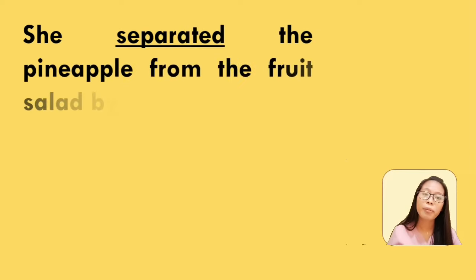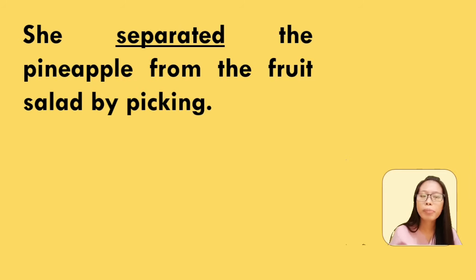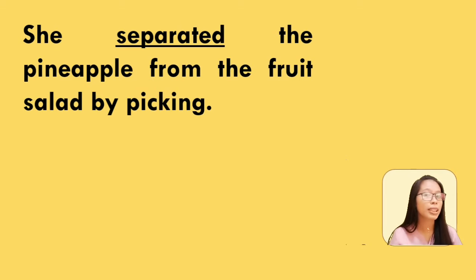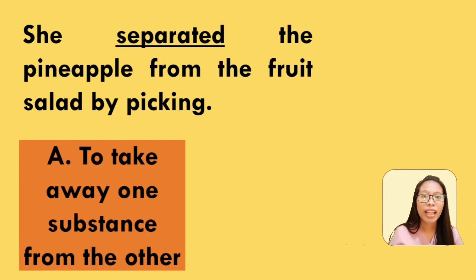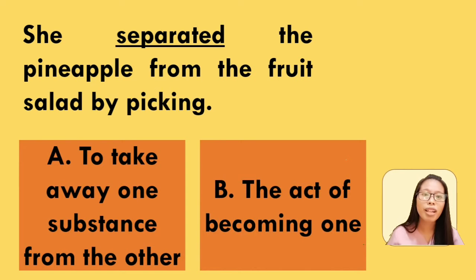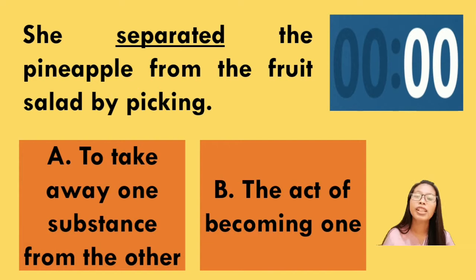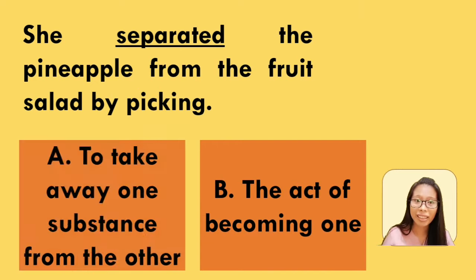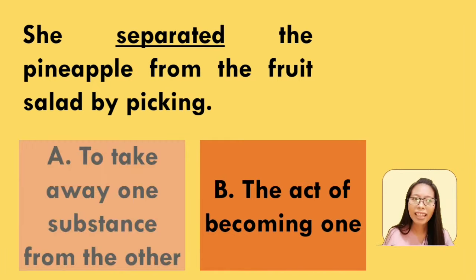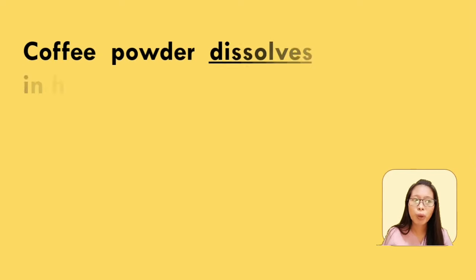The fifth one is: she separated the pineapple from the fruit salad by picking. The underlined word is separated. What do you think does it mean? Is it to take away one substance from the other, or the act of becoming one? The answer is letter A — to take away one substance from the other.